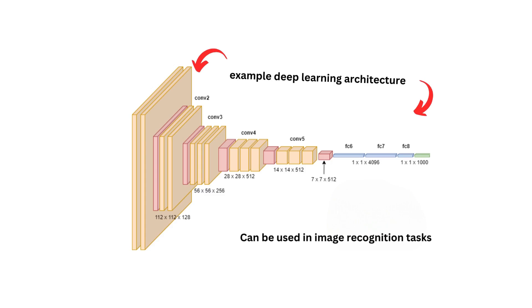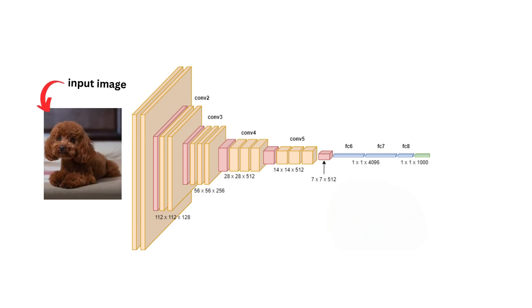First, let's define in the context of deep learning what are optimizers. Here we have the VGG architecture composed of multiple layers. Let's assume that the network is trained to do image recognition tasks.